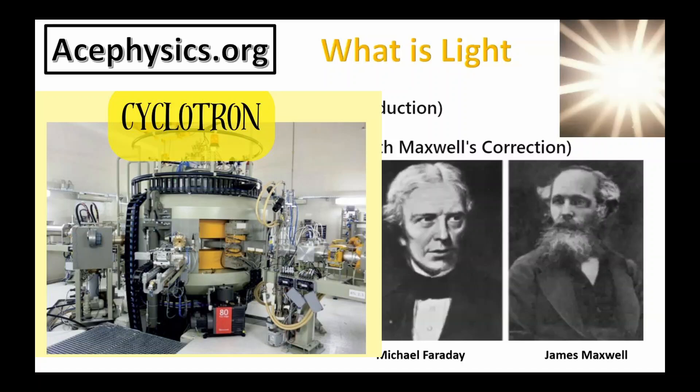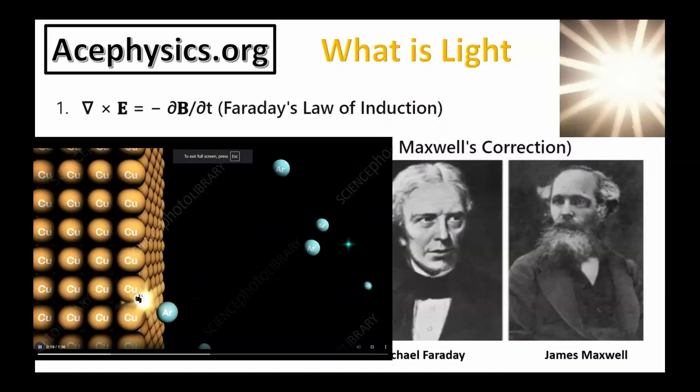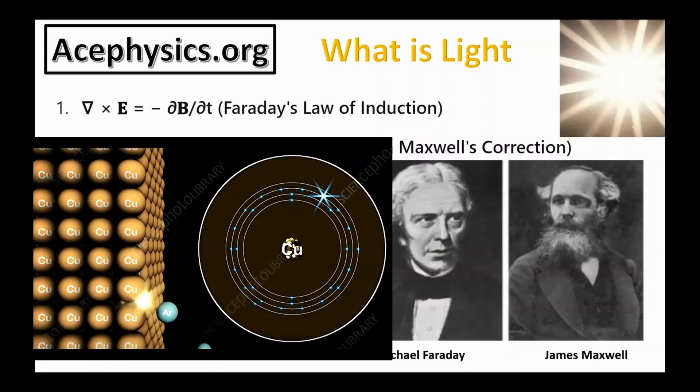Light is produced when charged particles, like electrons, accelerate, such as in a cell phone's radio frequency oscillator, or when electrons in atoms jump between energy levels, releasing energy as light.